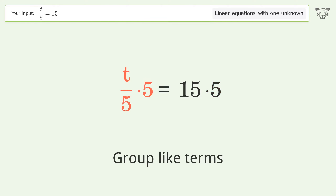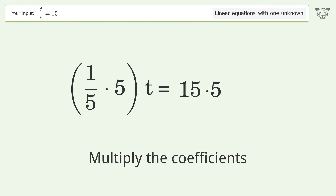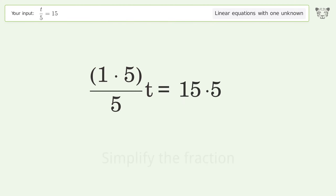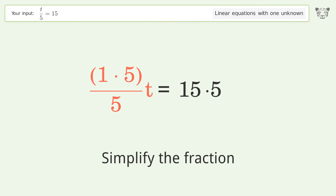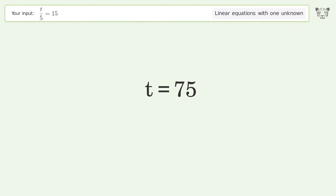Group like terms, multiply the coefficients, simplify the fraction, and simplify the arithmetic. The final result is t equals 75.